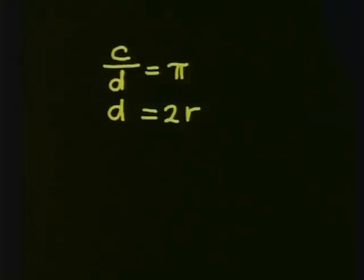The circumference divided by the diameter is equal to pi. The diameter is equal to 2 radius. So this means that C divided by 2r is equal to pi.